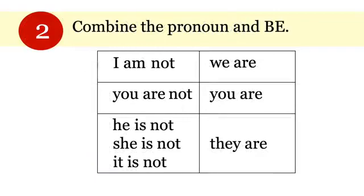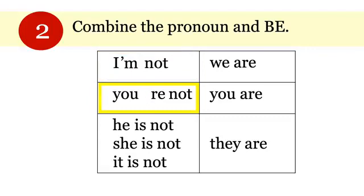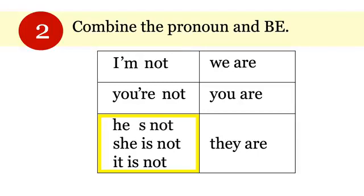The second way is to combine the pronoun and Be — you already saw this with the Be verb chart. Look at 'I am not': remember, drop the A, push it together, don't forget the apostrophe — 'I'm not.' For 'you are not,' same thing: drop the A, make one word, don't forget the apostrophe. For 'he is not,' this time it's the S you drop, then use the apostrophe — 'he's not,' 'she's not,' 'it's not.'